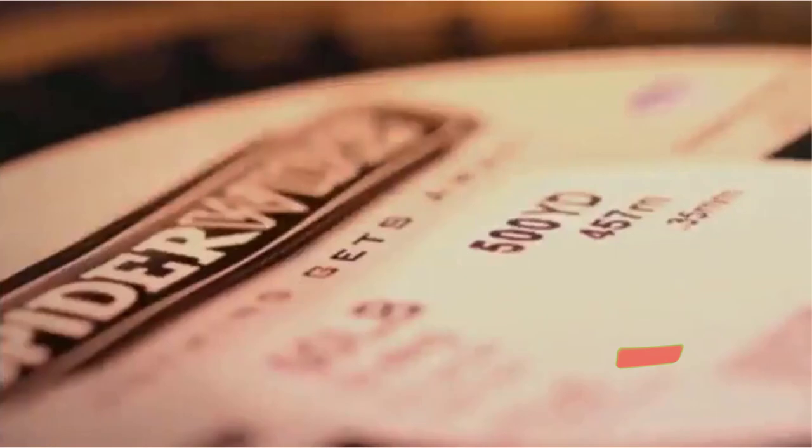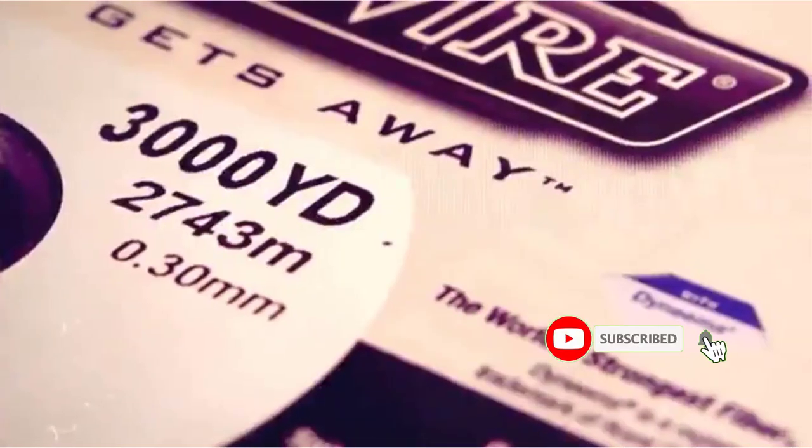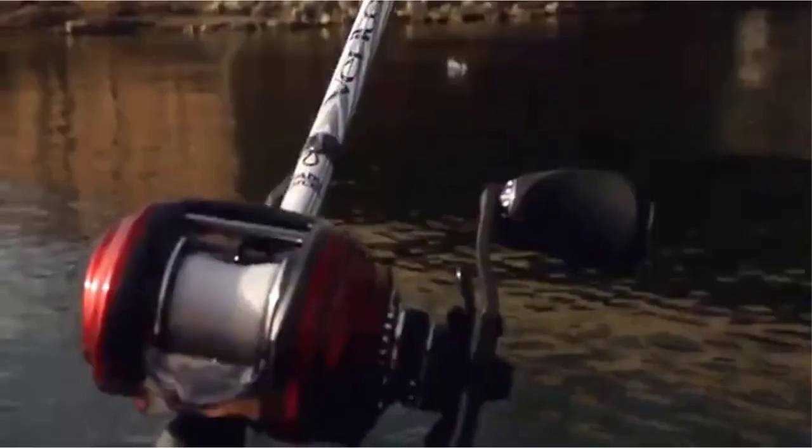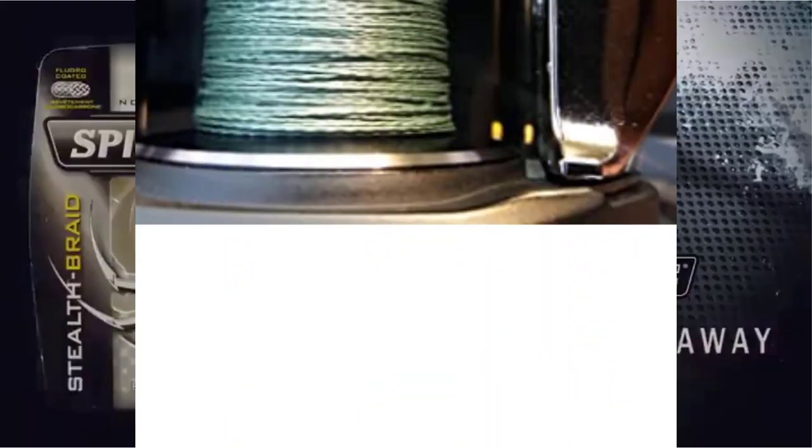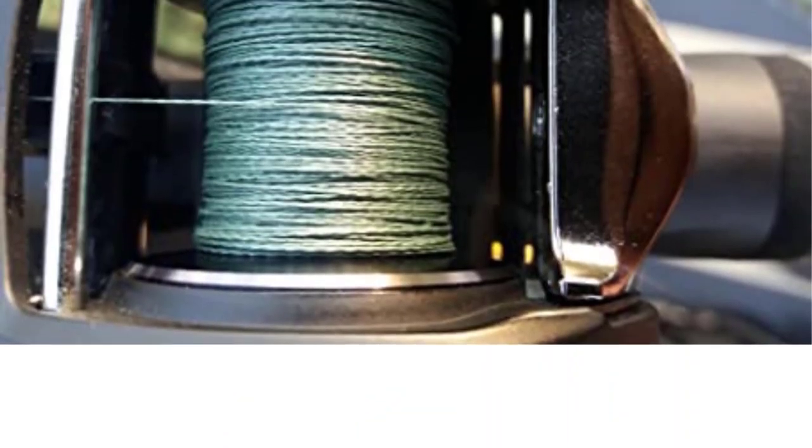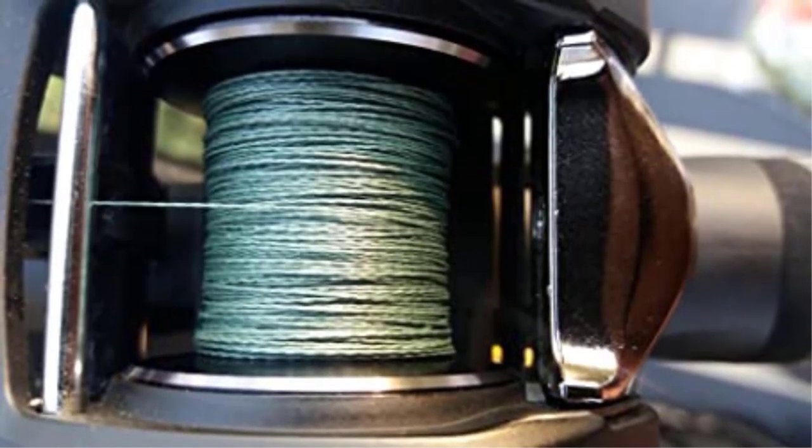We also really like the coating technology used with this line. It prevents color fading and it makes the line a little slicker. You'll be able to shoot the line out of your reel and through the guides without much friction at all. That means that your casting performance will improve.